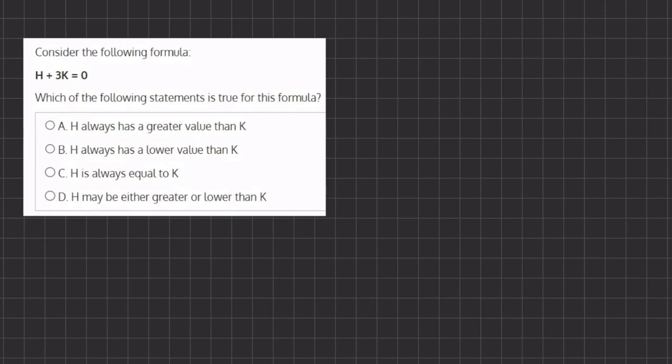So let's take a look first at our answers. Statement A says H is always greater than K. B states that H always has a lower value than K, so H is smaller than K. C states that H is always equal to K. And D states that H can either be greater or smaller than K.